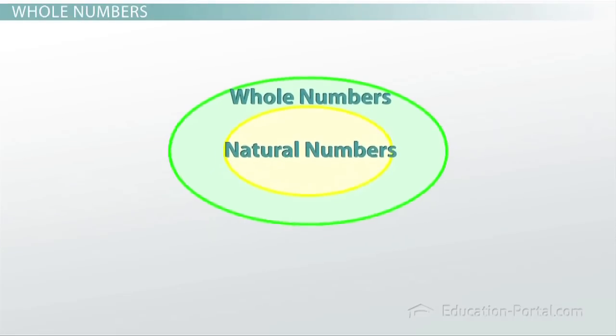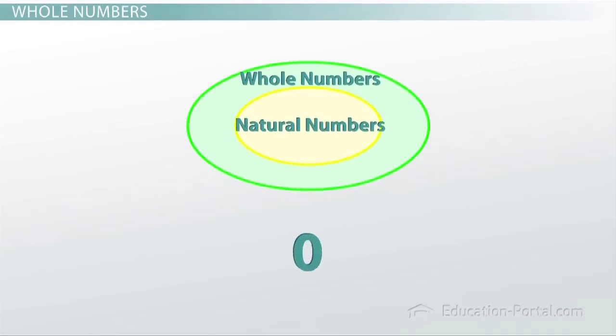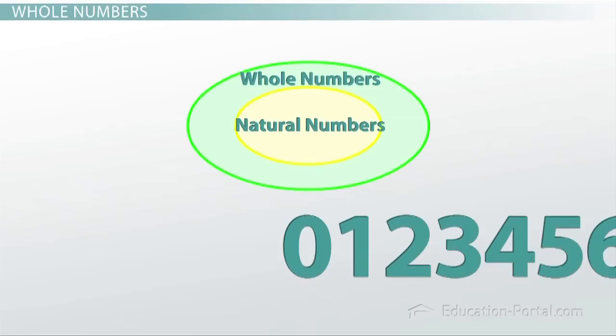But there is one whole number that is not a natural number, and that is the number zero. So when we're talking about the whole numbers, we're talking about the numbers that start with zero and start going up by one, two, three, on and on and on.